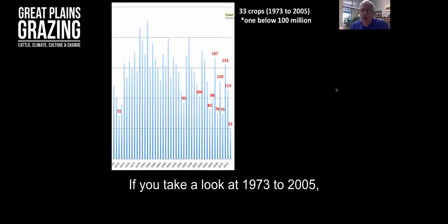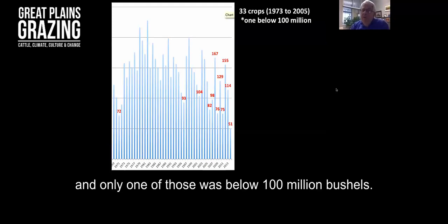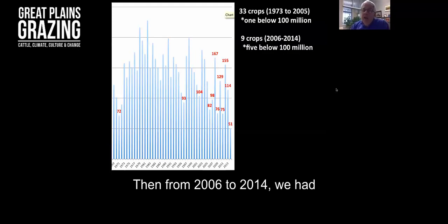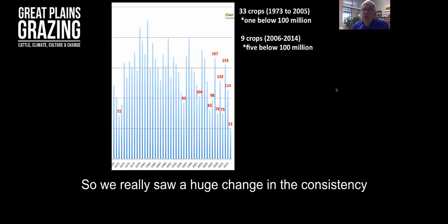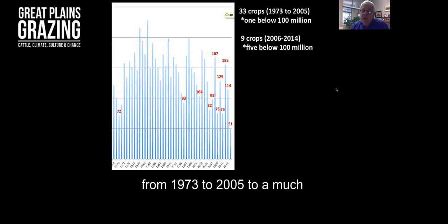If you take a look at 1973 to 2005, there were 33 crops and only one of those was below 100 million bushels. Then from 2006 to 2014, we had nine crops, five of those below 100 million bushels. We really saw a huge change in the consistency from 1973 to 2005 to a much more variable climate from 2006 to 2014.